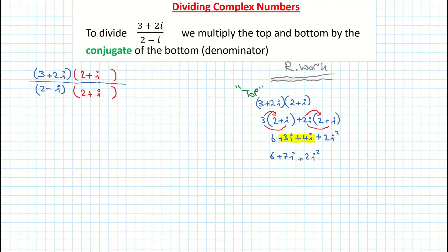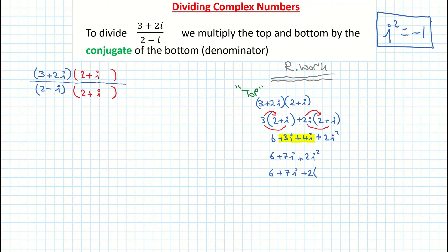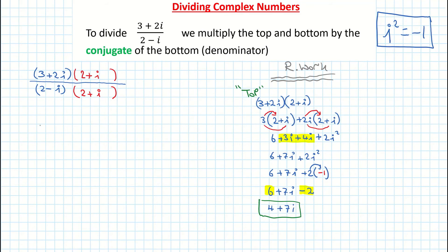We know from previous revision that i squared is the same as minus 1 — always remember that. So I substitute minus 1 for i squared. That gives me 6 plus 7i, and 2 multiplied by minus 1 gives me minus 2. Grouping the 6 and the minus 2 together gives me 4 plus 7i. So that's the top of my fraction, and I write that in: 4 plus 7i on the top.